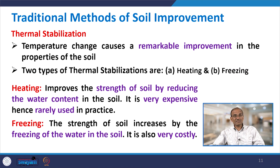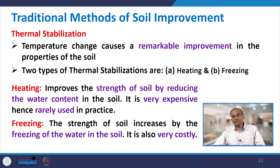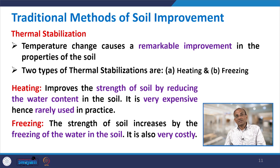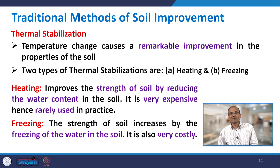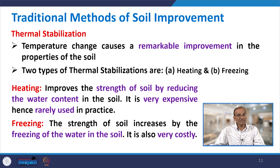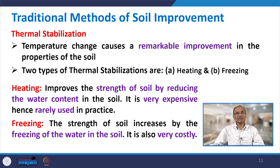Thermal stabilization comes in two types: heating and freezing. Heating improves soil strength by reducing water content but is very expensive and rarely used in practice. Freezing increases soil strength by freezing water in the soil, but is also very costly. Out of these three traditional methods — mechanical, chemical, and thermal — mechanical stabilization is the most popular, though it also has drawbacks, especially for foundation design where geosynthetics may be required.